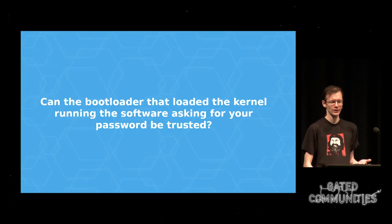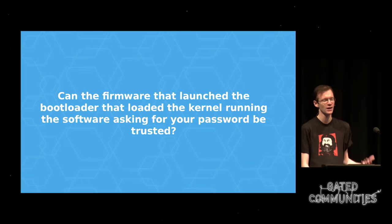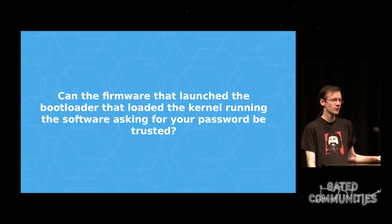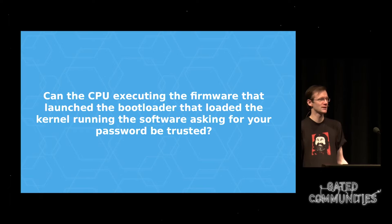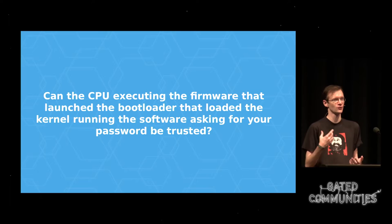Say we have a means of verifying the bootloader. How do we ensure that the firmware that launched the bootloader didn't tamper with it? And if we solve all of that, fundamentally the CPU itself is executing this code and is capable of doing whatever it wants. If the CPU is not trustworthy, there is no way to trust the firmware, no way to trust the bootloader, no way to trust the kernel, no way to trust the password prompt.